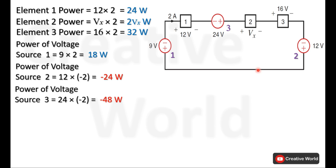The last source of the circuit is voltage source 3. Voltage across it is 24 volts and current through it is 2 amperes. This current is entering from the negative terminal, so it will be taken with minus sign. The power of voltage source 3 will be 24 multiplied by minus 2, which is minus 48 watts. Because of the minus sign, this power is being supplied by voltage source 3.